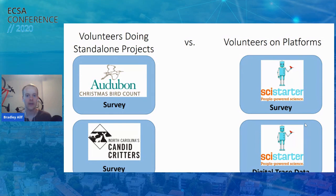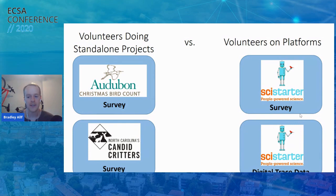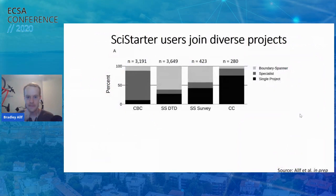In pursuit of understanding how growth in third-party engagement on SciStarter might be impacting volunteers, we were interested in comparing volunteers that engage with standalone projects to volunteers engaging on the SciStarter platform. For this research, we surveyed members of the Christmas Bird Count — a standalone project focused on tracking birds over time — as well as volunteers from North Carolina's Candid Critters project, where people do camera trapping for mammals. We compared those surveys to a survey of volunteers on SciStarter, as well as digital trace data from SciStarter capturing what volunteers click on and what they contribute.